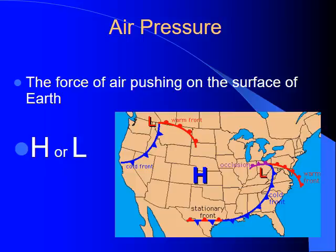The last part of this presentation is on air pressure. Air pressure is the force of air pushing on the surface of the Earth — it's pushing on us all the time, but we're used to it. There are two types of pressure systems: H for high pressure and L for low pressure. Where the high-pressure system is, there are no front boundaries between air masses, so that's going to be nice, clear weather — no precipitation.